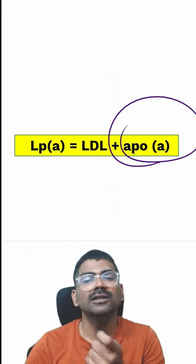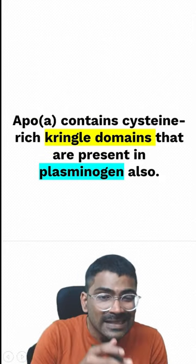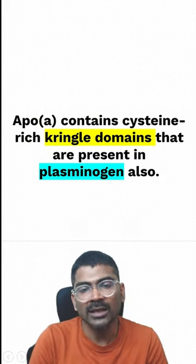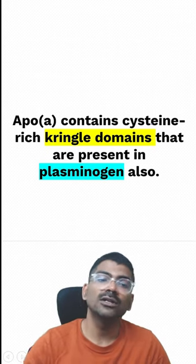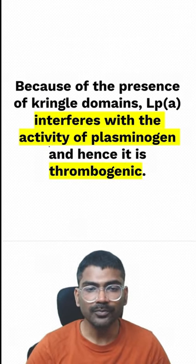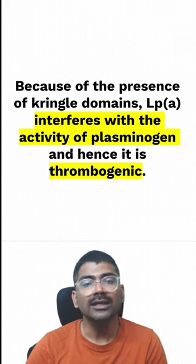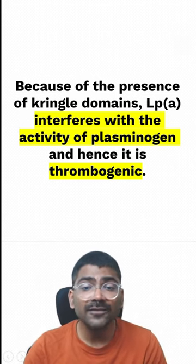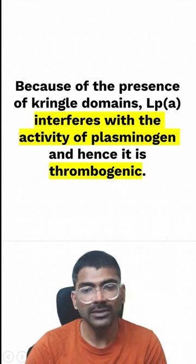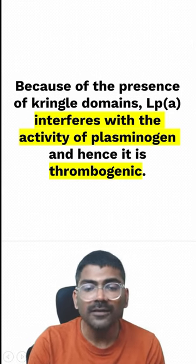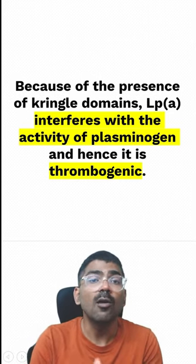What is the problem with this apo(a)? It contains a cysteine-rich kringle domain, and this kringle domain is also present in plasminogen. Because of the presence of this kringle domain, lipoprotein(a) interferes with the activity of plasminogen, preventing fibrinolysis — and hence it is thrombogenic.